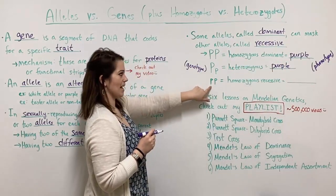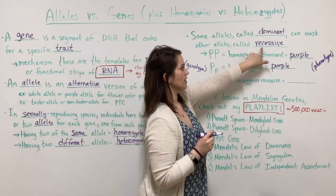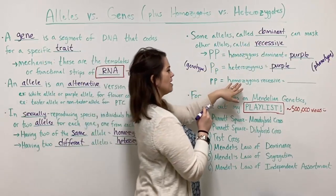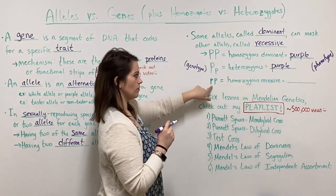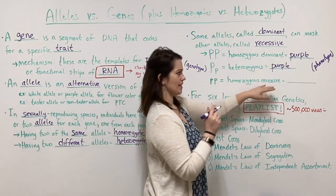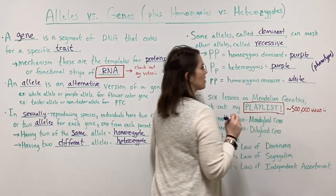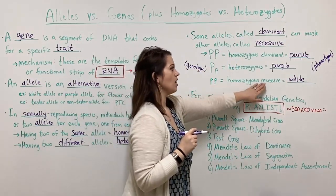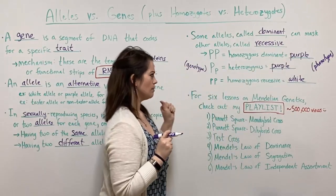If a pea plant has only two recessive alleles and there's no dominant allele to provide purple color, it is homozygous recessive and its flowers will be white. This shows that the recessive trait only appears when there's no dominant allele to mask it.